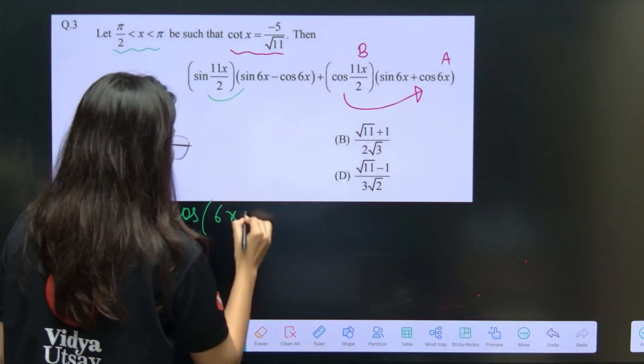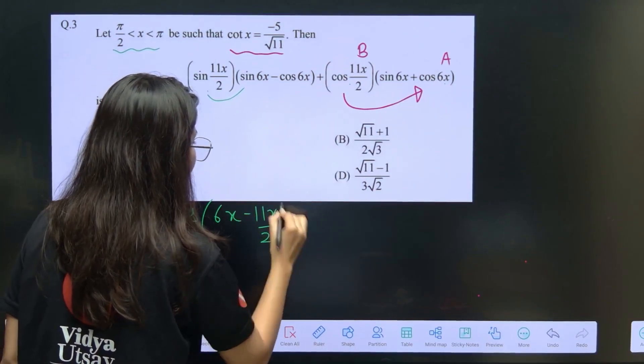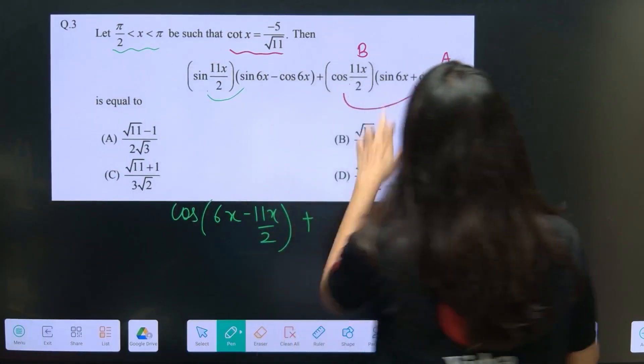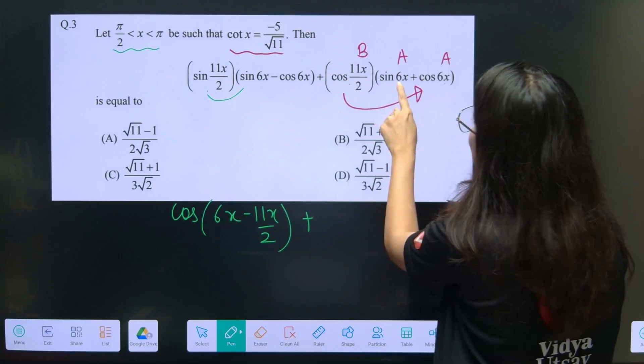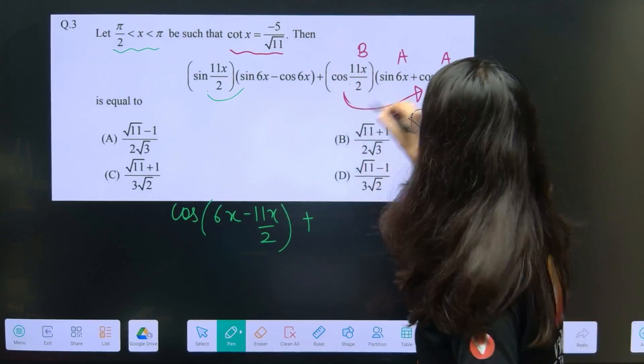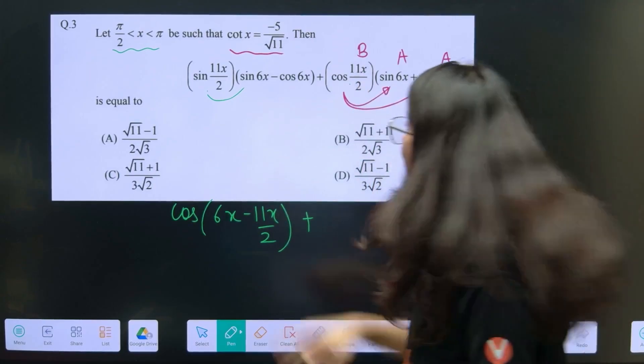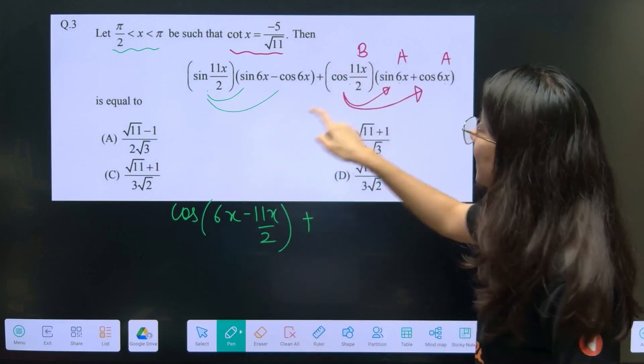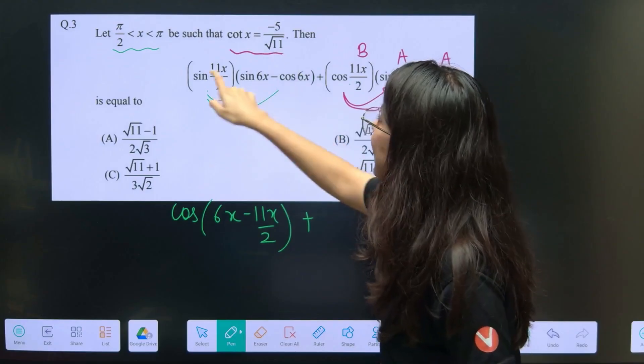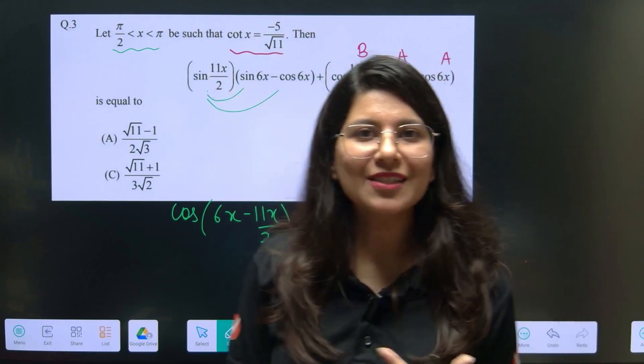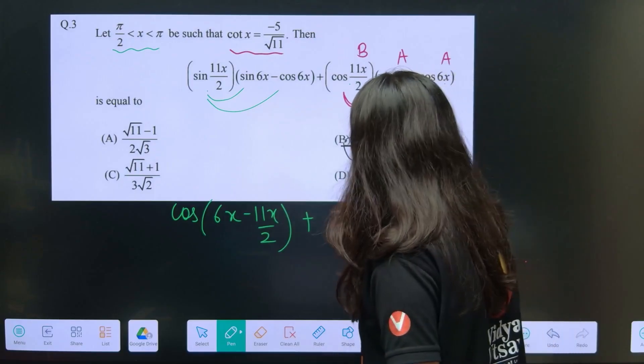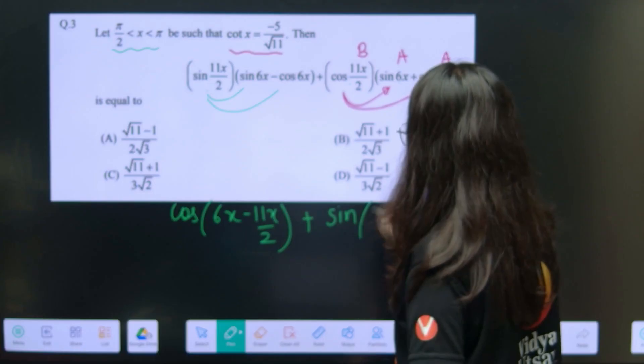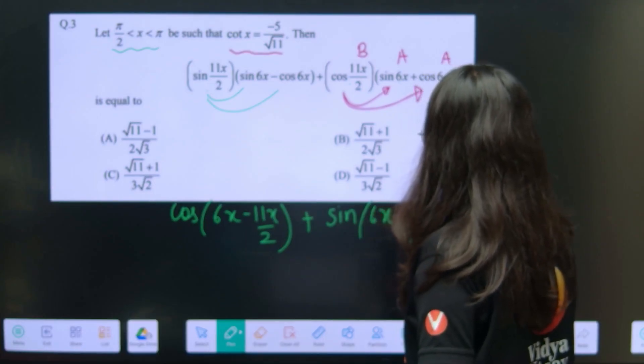So cos a minus b, a minus b is 6x minus 11x by 2. Now what are the remaining terms? Remaining terms if you look, again this is your a and this is your b. So this is sin a cos b and this one is minus cos a sin b. Sin a cos b minus cos a sin b, again sin a minus b.